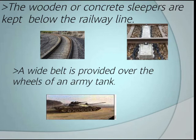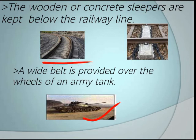Army tanks are provided with a wide belt over their wheels instead of regular tyres. This big chain increases the surface area, so the tank can move in any condition — on soft sand, hard ground, or mud. These wooden or concrete rail slippers similarly increase surface area so the tracks do not sink.